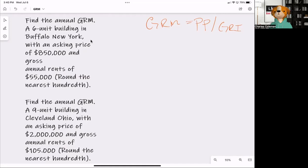Find the annual gross rent multiplier: A six-unit building in Buffalo, New York, with an asking price of $850,000 and gross annual rent of $55,000. Round to the nearest hundredth.